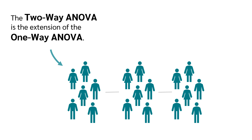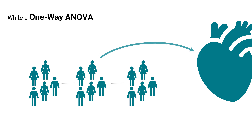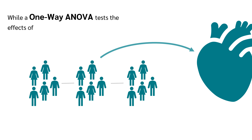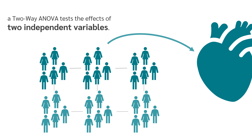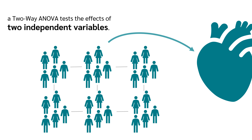The two-way ANOVA is the extension of the one-way ANOVA. While a one-way ANOVA tests the effects of a single independent variable on a dependent variable, a two-way ANOVA tests the effects of two independent variables.